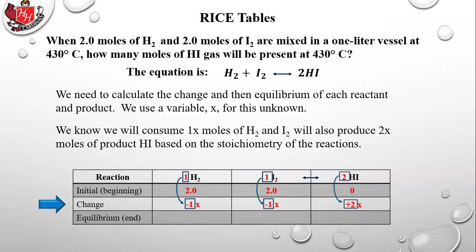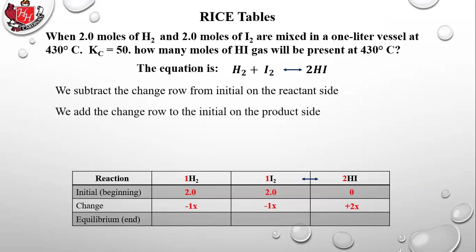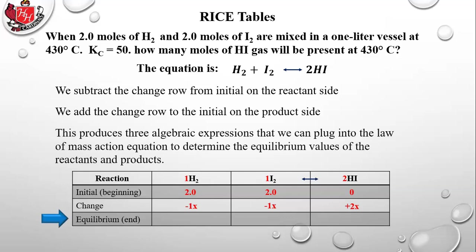Those coefficients go into the change row. We subtract the change row from the initial on the reactant side and add the change row to the initial on the product side. This produces three algebraic expressions: under H2 we have 2 minus 1X; for I2, same thing, 2 minus 1X; and for HI, 0 plus 2X gives us 2X. Those represent the equilibrium concentrations of each reactant and product.